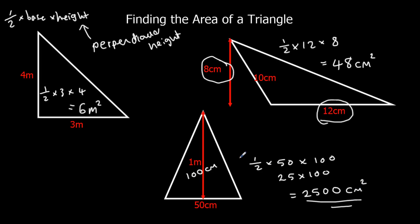I could have also done this question in meters. So I would have had to change this one to 0.5 meters. That would have given me half times half times one. Half times a half. Half times a half is a quarter. Half of a half is a quarter. So that would be 0.25 times one. Which is 0.25 meters squared.